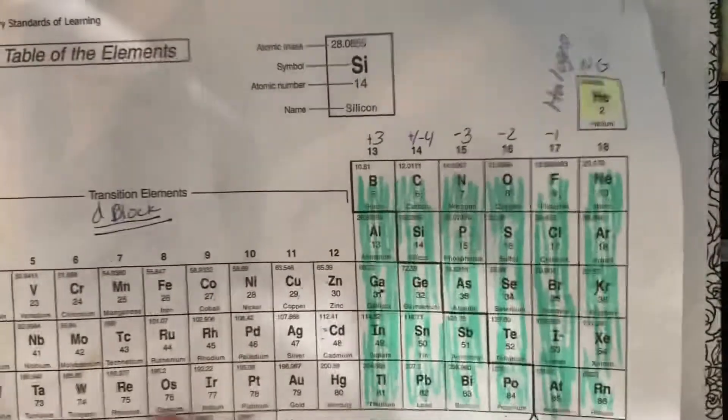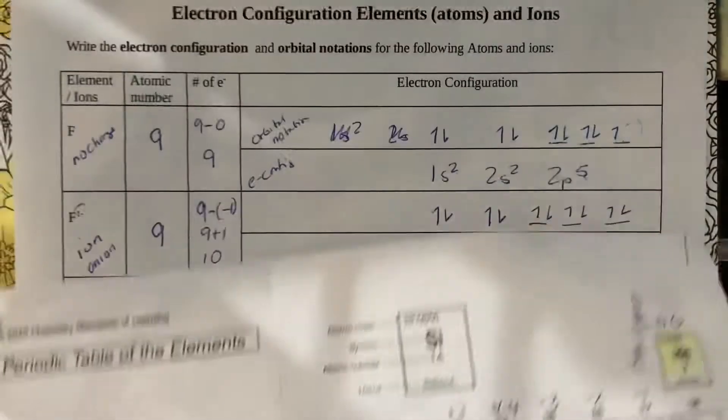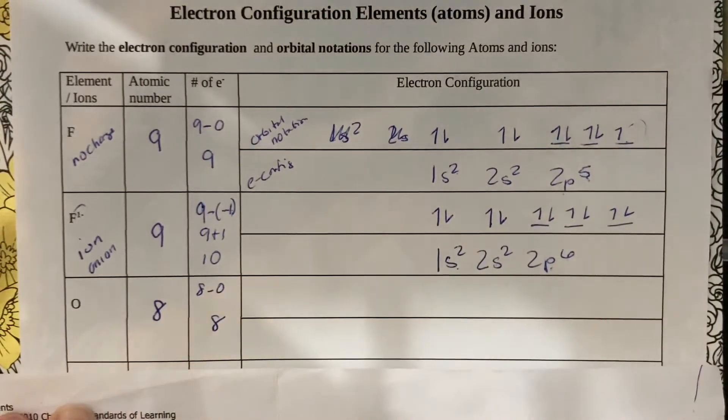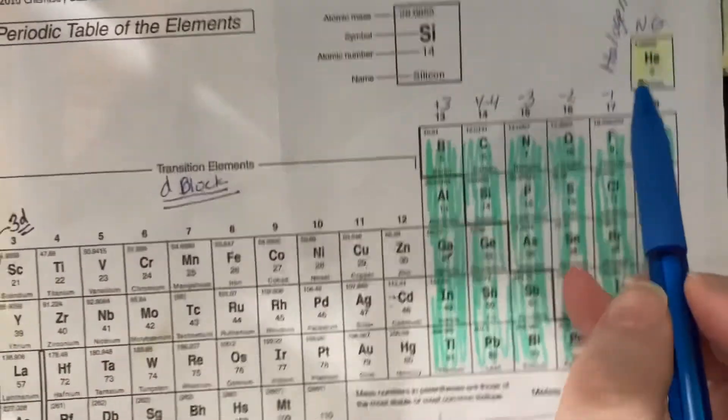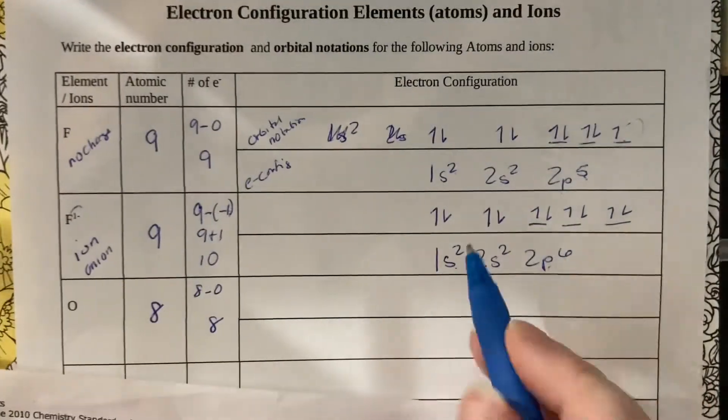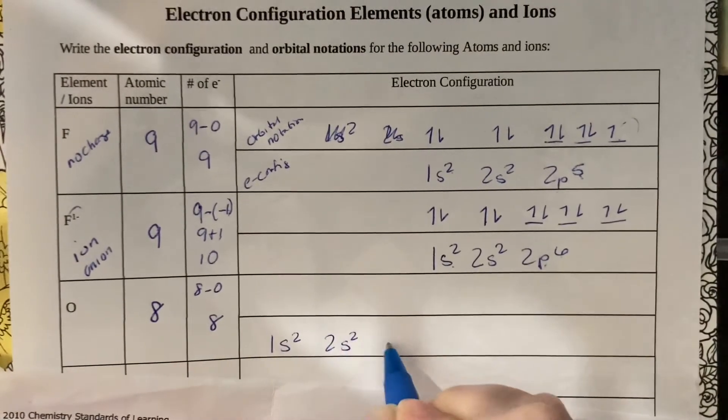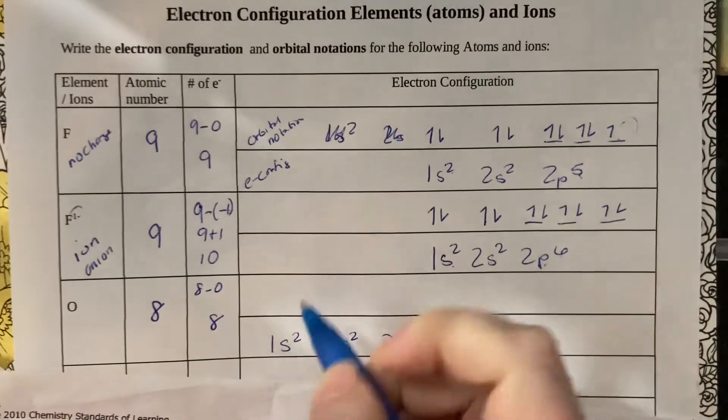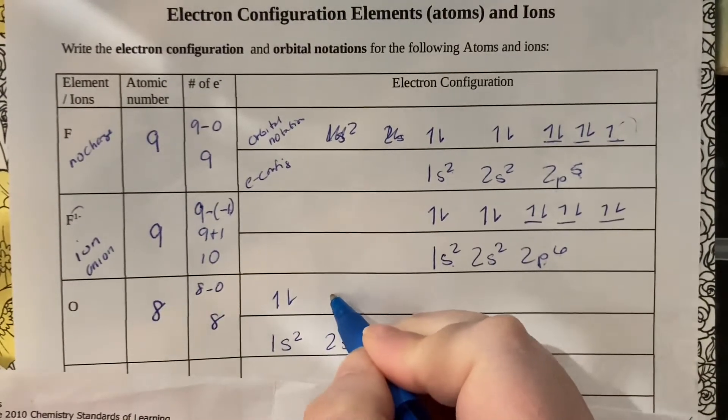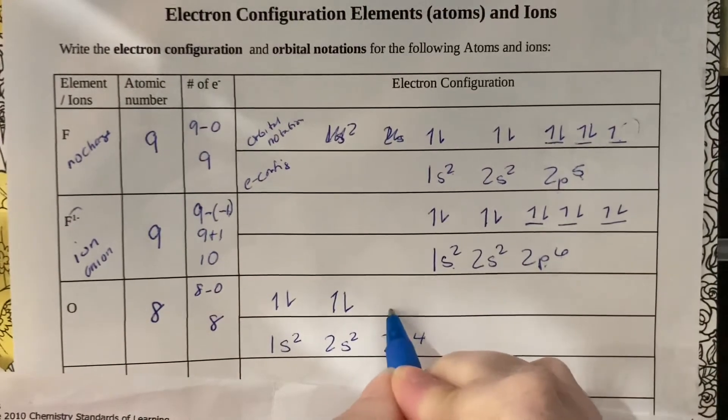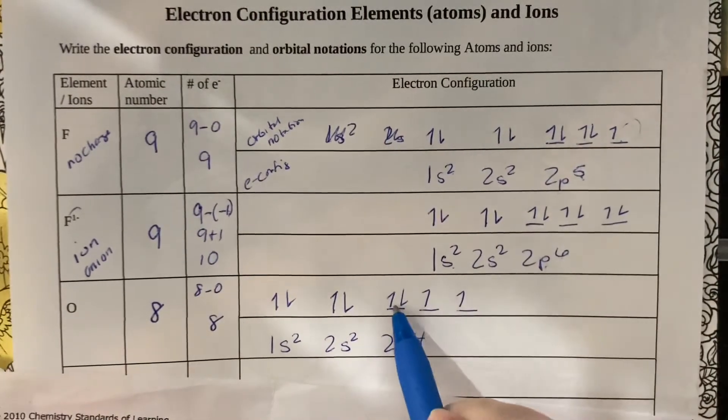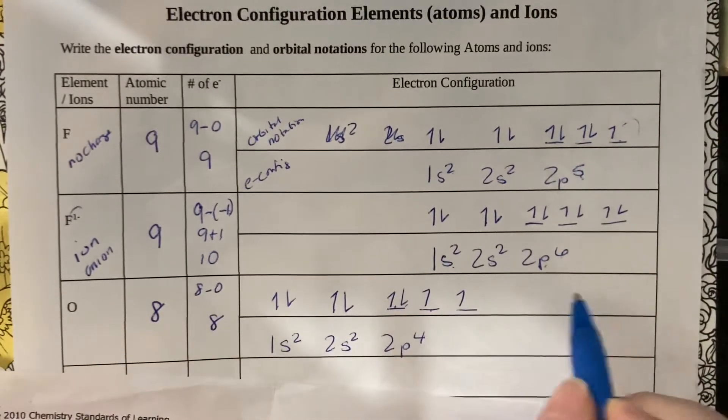Oxygen is over here, he has eight for the atomic number. For the atom, eight minus zero or eight total. Electron configuration: 1s² 2s² 2p⁴. Orbital notation: s just has one block, there's two in this, up down. 2s gets one block, there's two total, up down. 2p, four p's go split into threes: up up up down. If you were to do up down up down here, you'd get no points for the whole orbital, so be careful.